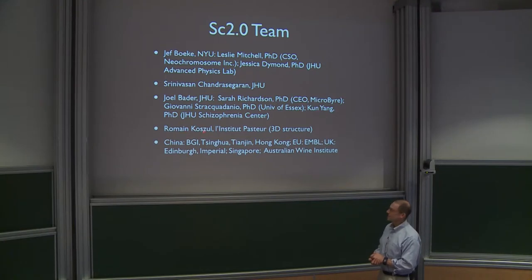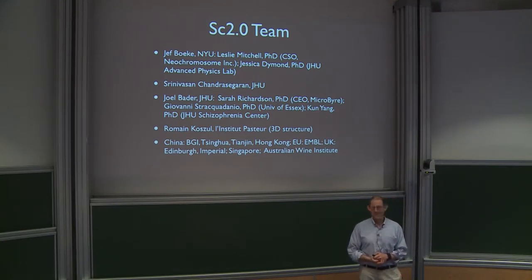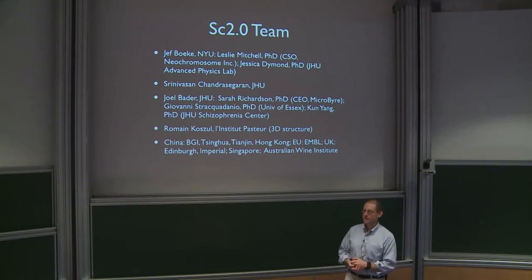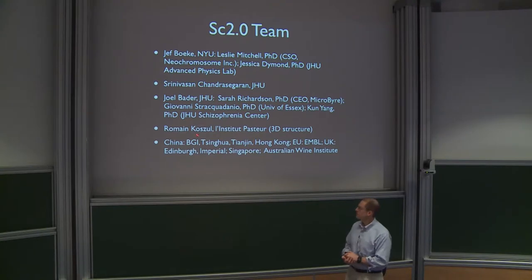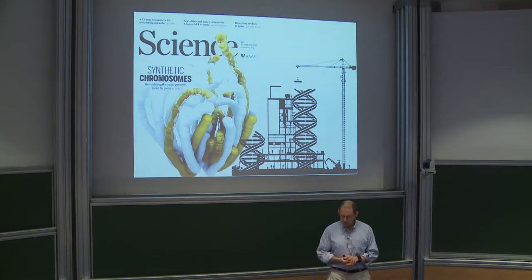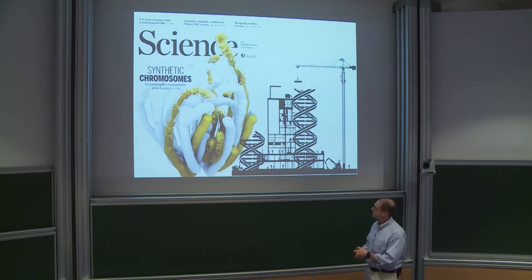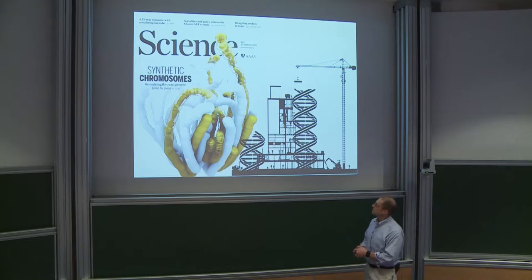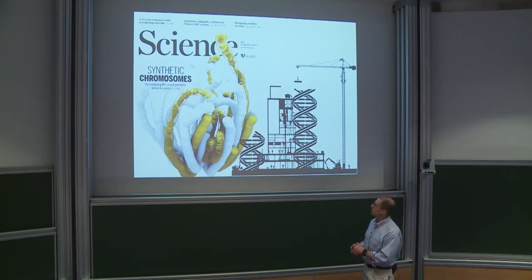Other participants include Romain Kasul, now a faculty member, who spoke earlier today and has been working on comparing the 3D conformation of the chromosomes we've synthesized with the native chromosomes, and partners all across the world making different chromosomes. About a year ago there were a series of papers. This figure was generated with data from Romain's lab showing the synthetic chromosomes organized in the nucleus in a goldish color, with the remaining wild-type chromosomes in a whitish-grayish color.